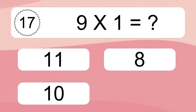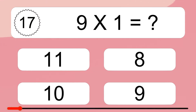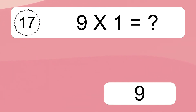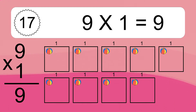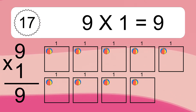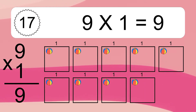Nine times one equals what? Nine times one equals nine. We have nine boxes and each box has one colorful ball inside. If you count all the balls in all the boxes together, you will have nine times one balls. This equals nine balls.